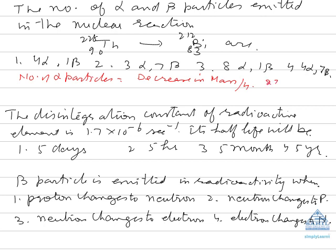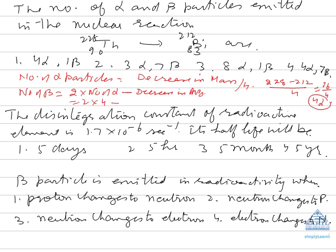So the mass number changes from 228 to 212 divided by 4, means 16 upon 4, that is to say 4 alpha. Now number of beta particles emitted is equal to 2 times number of alpha particles minus decrease in atomic number. So 2 into 4 minus 7 is equal to 1. Hence the correct answer is 4 alpha, 1 beta.